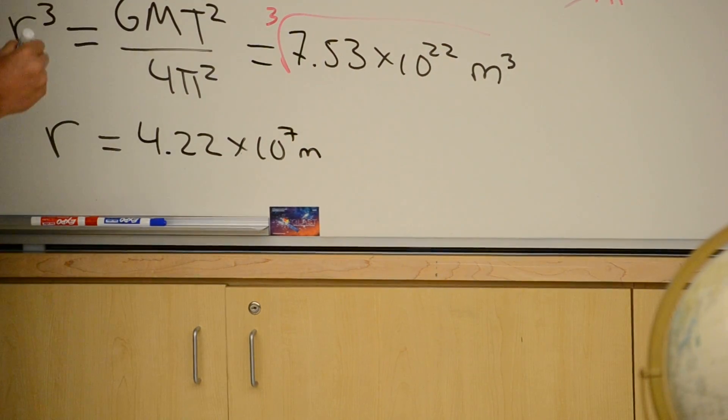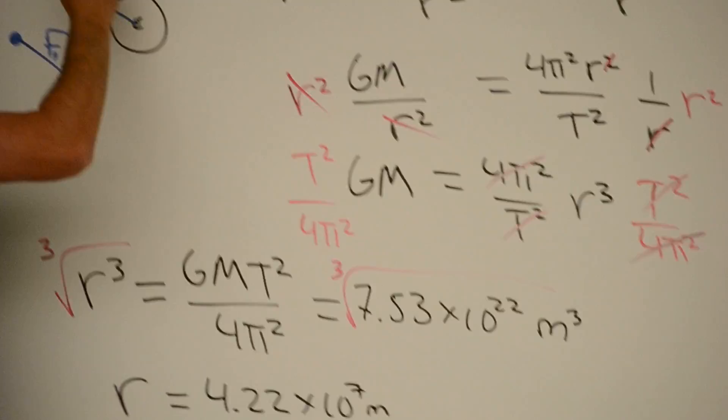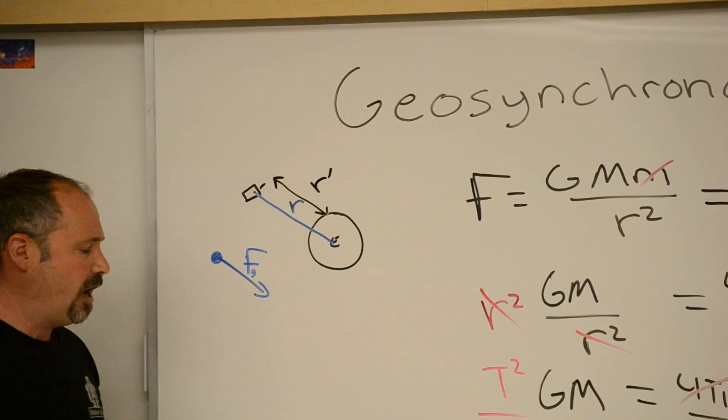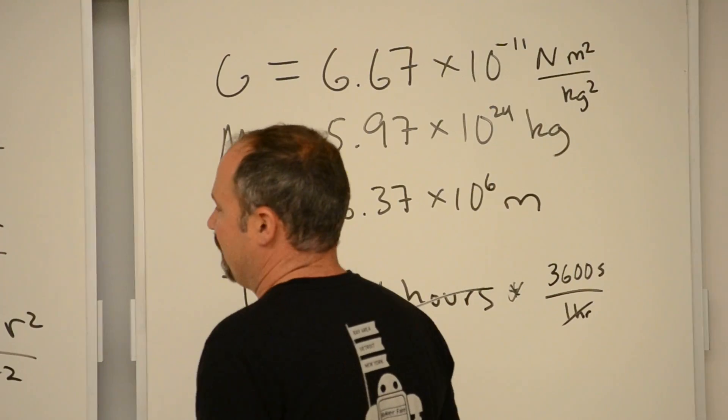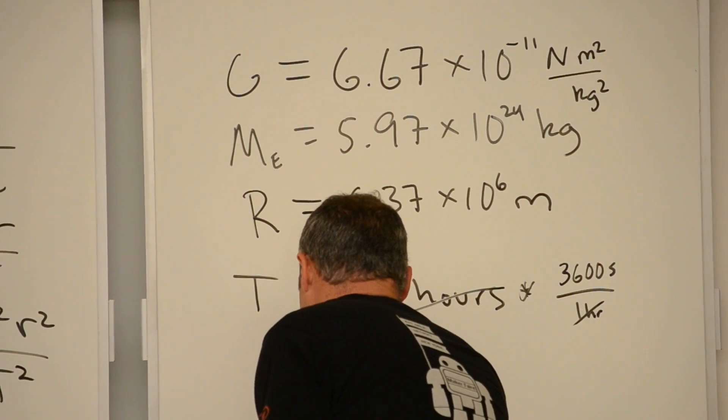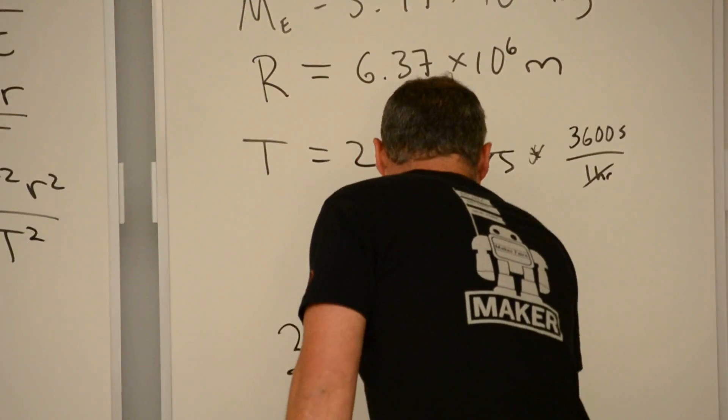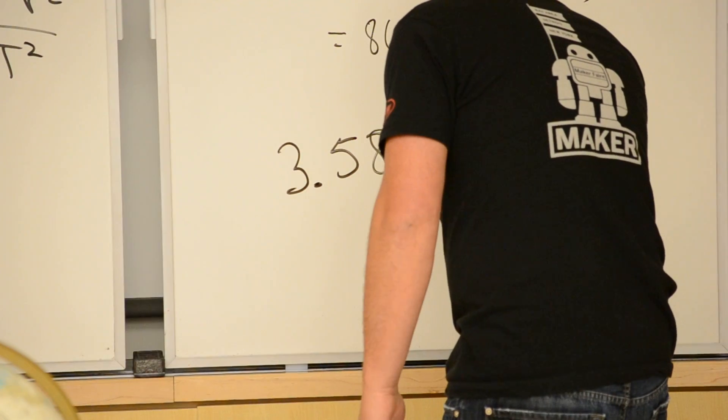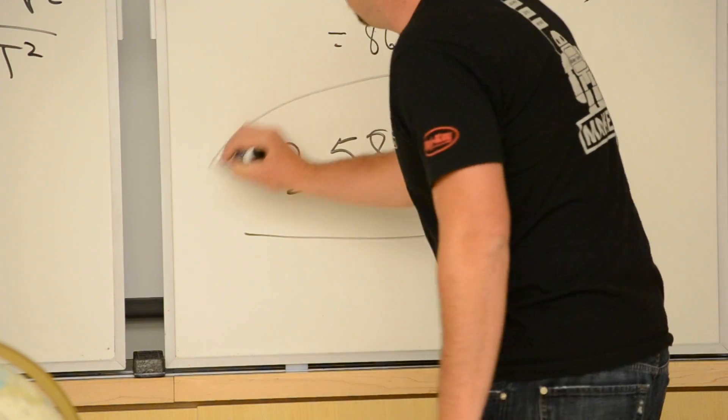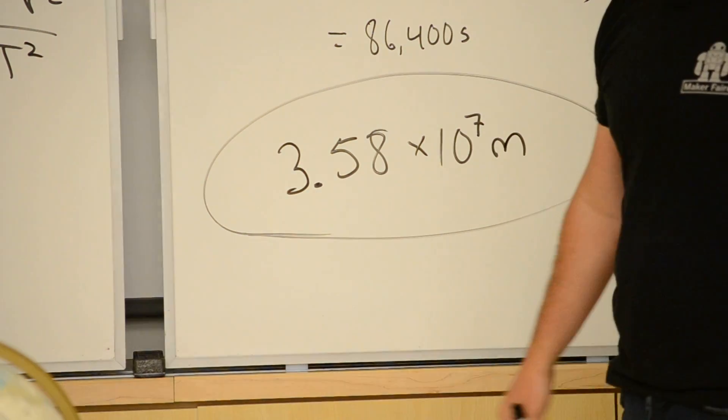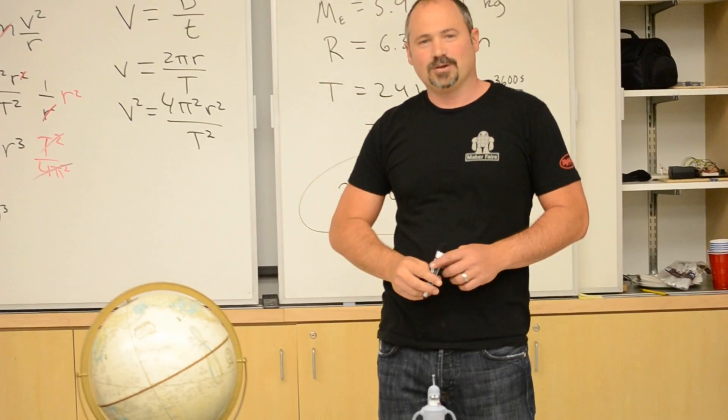And if you want to know this distance, let's call it r prime, you just take this value here, subtract off the radius of Earth, and you get 3.58 times 10 to the seventh meters. That is the distance above Earth's surface for a geosynchronous orbit.